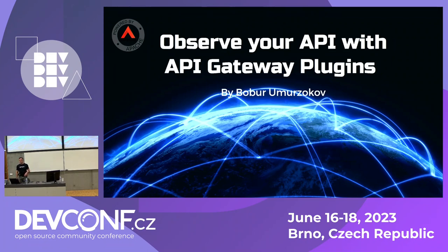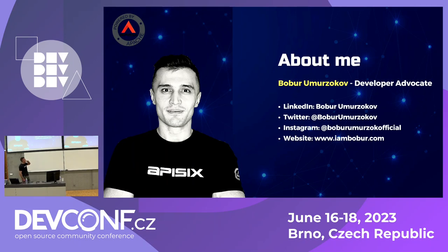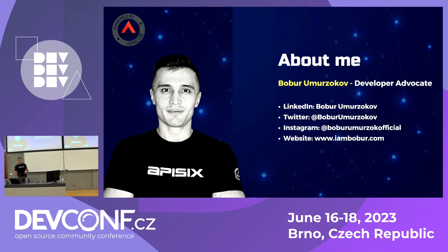Today's topic: we discuss how you can observe your APIs with the help of API gateway plugins. Before we get started, let me introduce myself. My name is Babur — you can call me Tiger, which is a translation of Babur into English. My surname, Livermore, means 'Tiger who lives longer.' You can also call me Bob. I'm a software engineer, open source contributor to Apache Software Foundation, and developer advocate for a project called Apache APISIX. Feel free to reach out to me on social channels if you have questions.